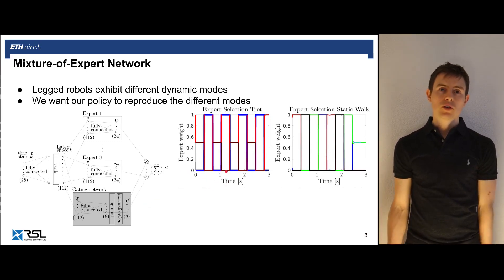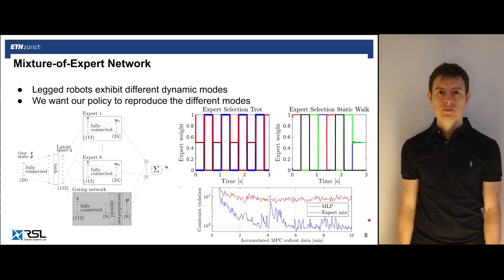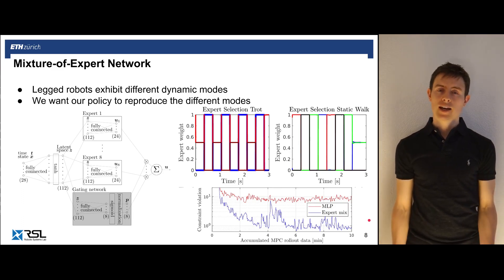Furthermore, choosing specific experts for specific contact configurations further reduces the constraint satisfaction, since a given expert can focus specifically on satisfying all the constraints for their specific mode, for example not applying contact forces to swing legs.